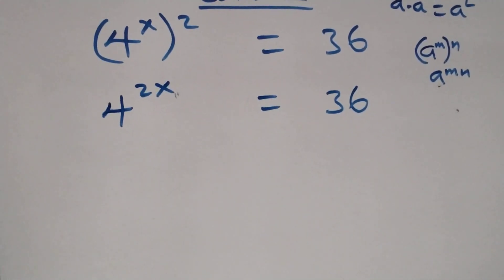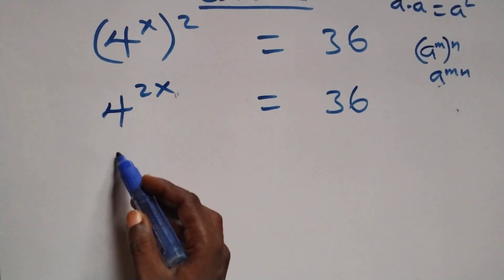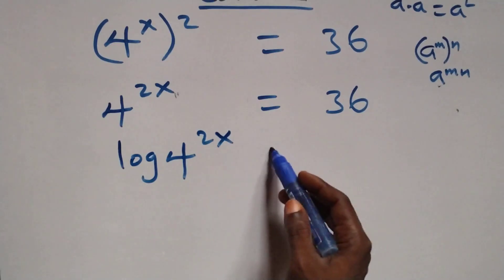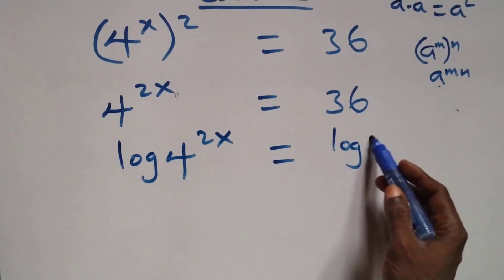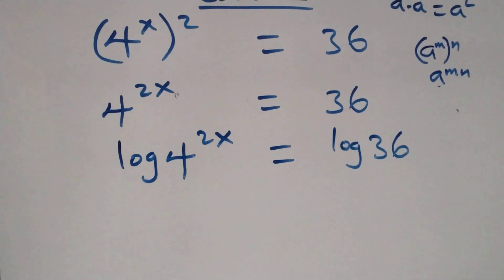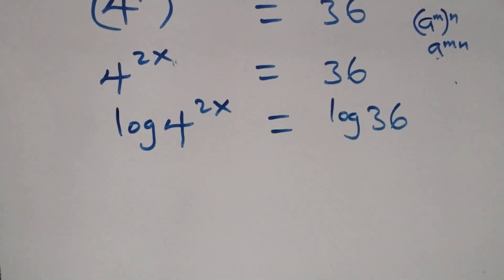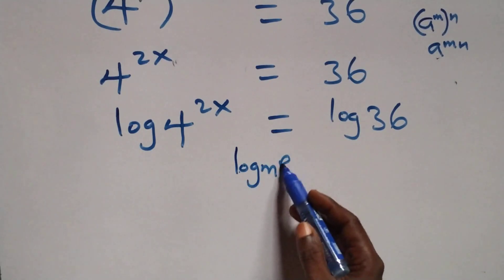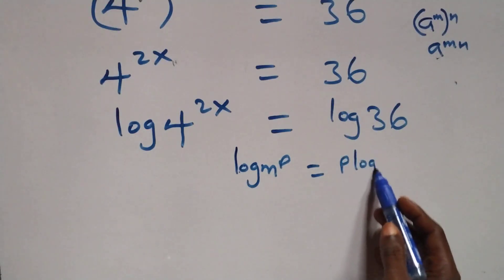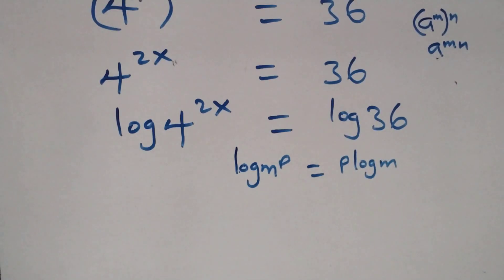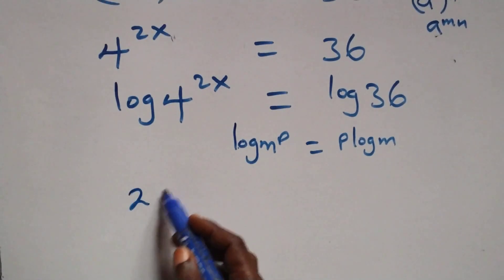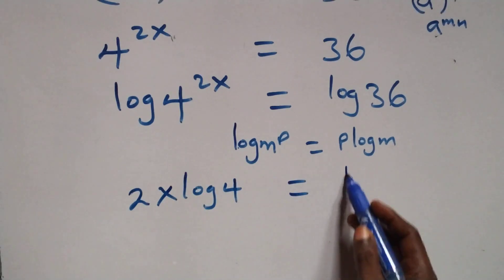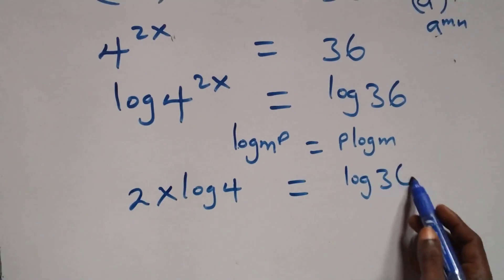Here we apply log on both sides. That is, this becomes log of 4 raised to power 2x equals log 36. The next step: we apply the power law of logarithms. When we have log m raised to power p, this is the same as p log m. So what we have becomes 2x log 4 equals log 36.